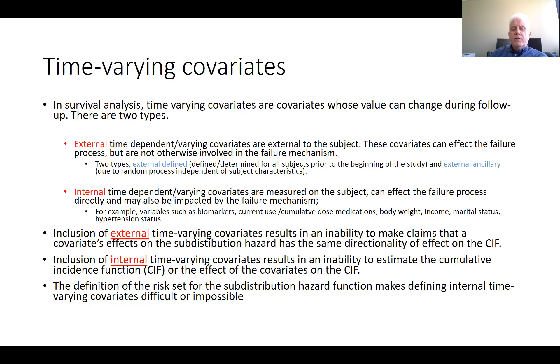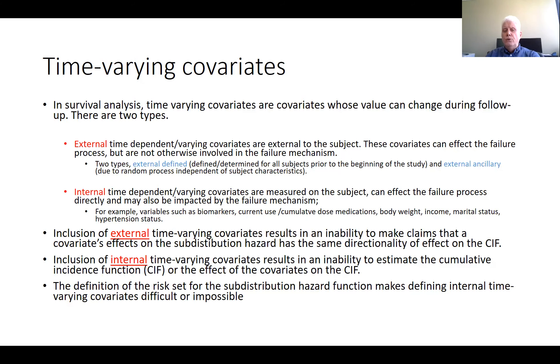Time-varying covariates can be defined as covariates whose value can change during follow-up. There are two general types.